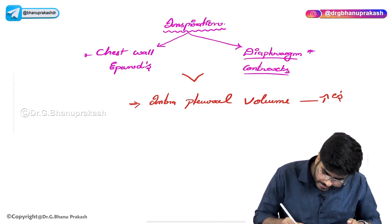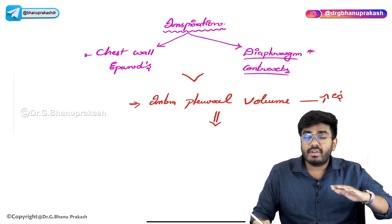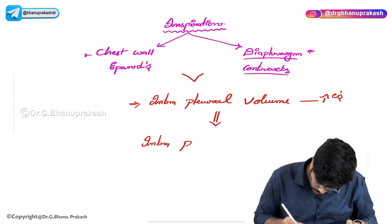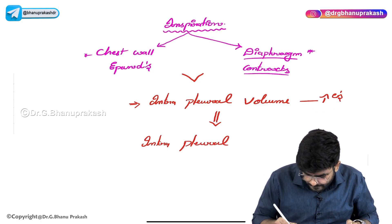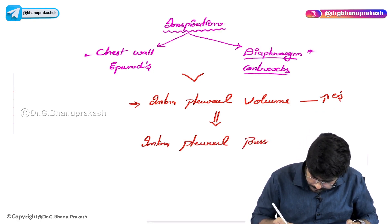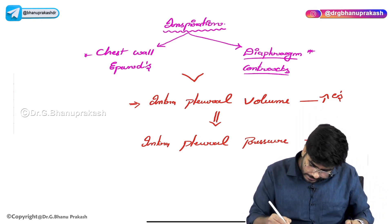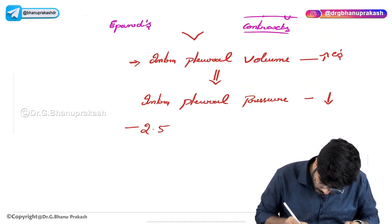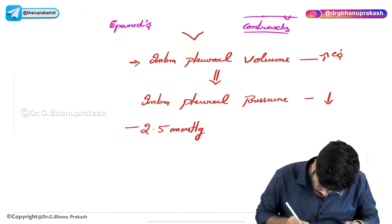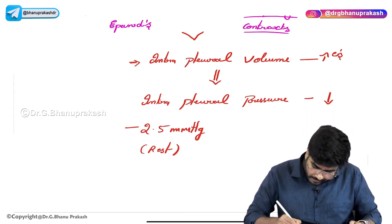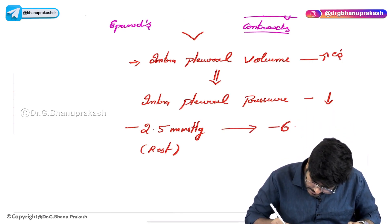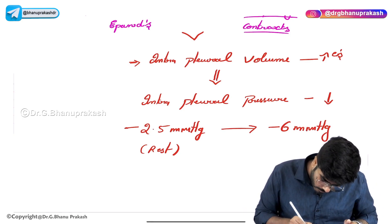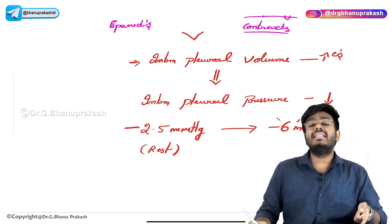We know from Boyle's law: when intra-pleural volume increases, pressure will decrease. So the intra-pleural pressure falls. Normally, intra-pleural pressure is minus 2.5 mmHg at rest. During inspiration, it will go to minus 6 mmHg. Minus 6 is less than minus 2.5, so pressure is brought from minus 2.5 to minus 6 mmHg.